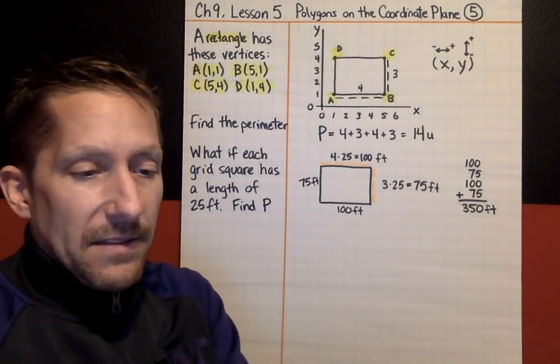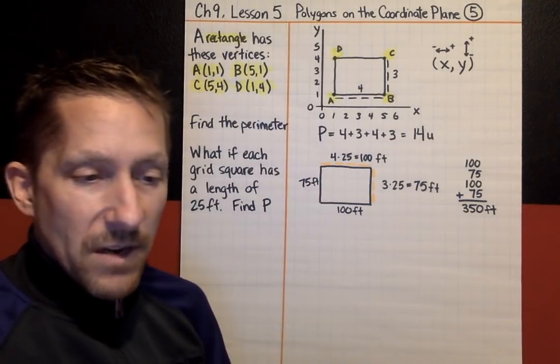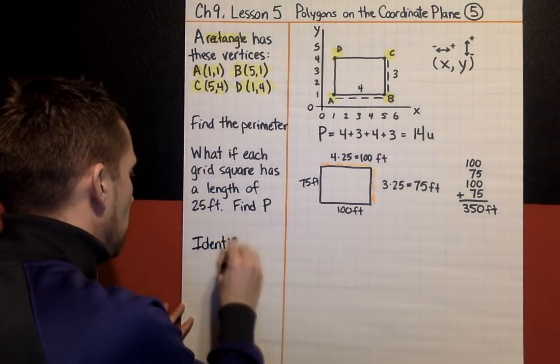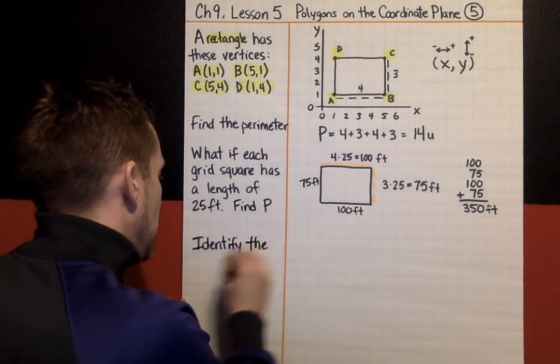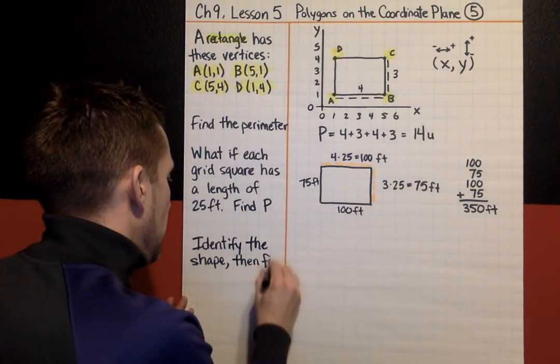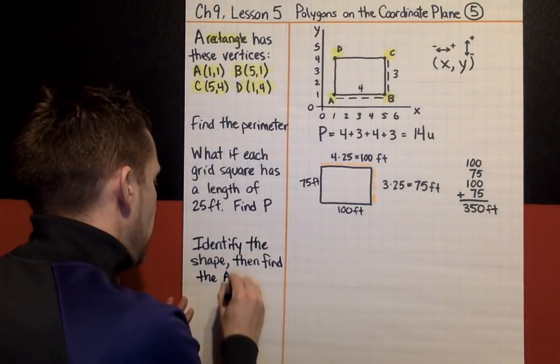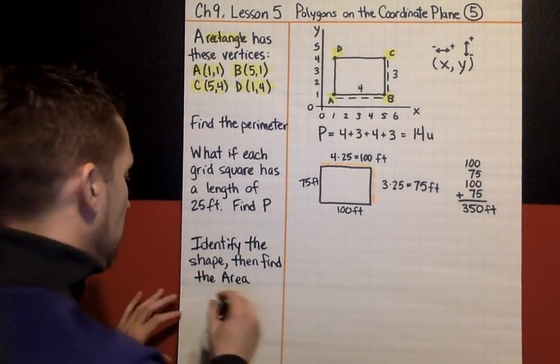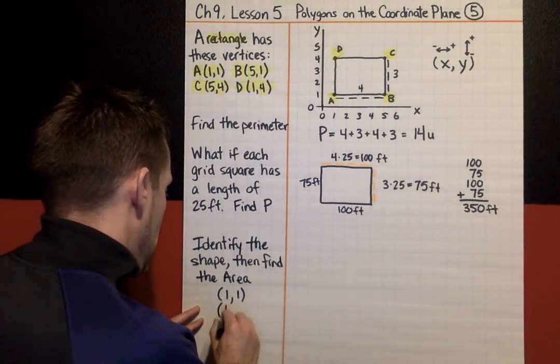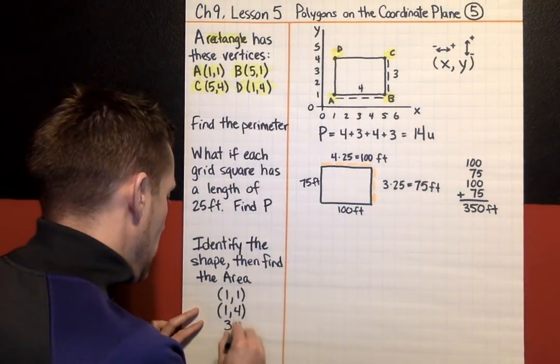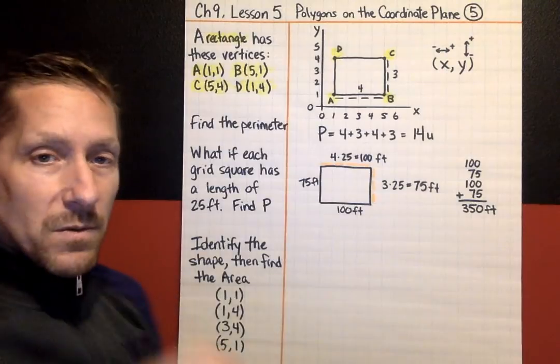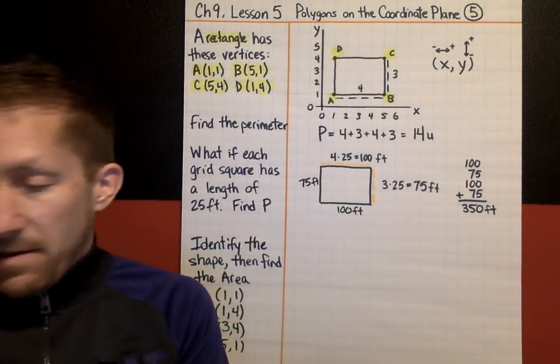Okay. The next example is identify the shape from the coordinates and then find the area. So, two-part question. Identify the shape and then find the area. And these are the ordered pairs you need to put on the coordinate plane: (1,1), (1,4), (3,4), and (5,1). So, we're going to put these ordered pairs on a coordinate plane.